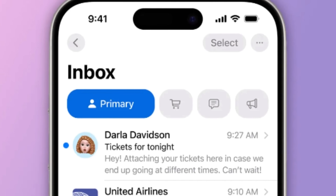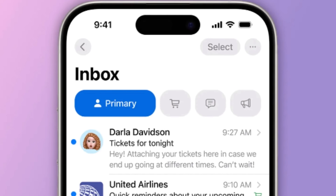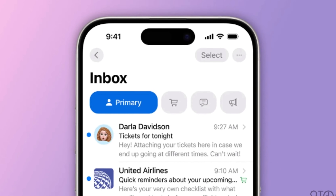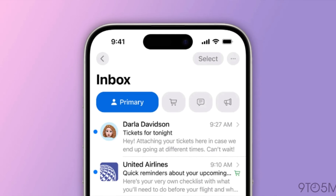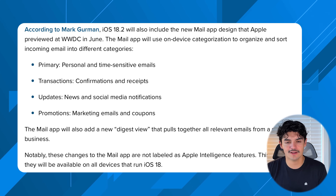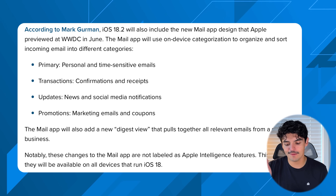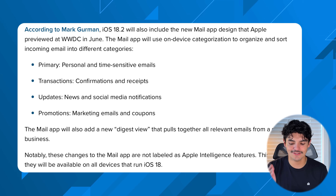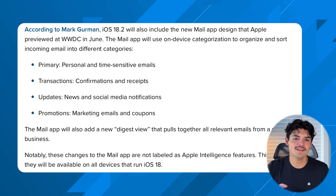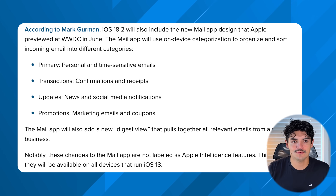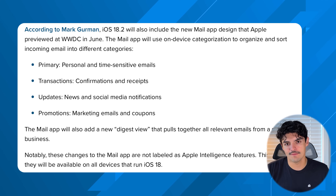There's also a big redesign coming to the Mail app — finally bringing prioritized messaging powered by Apple Intelligence. It will categorize your inbox into buckets: Primary, Transactions, Updates, and Promotions, making it much easier to navigate and find exactly what you need. Many third-party mail apps have done this already, but having it built natively into Apple Mail will make a lot of people happy.